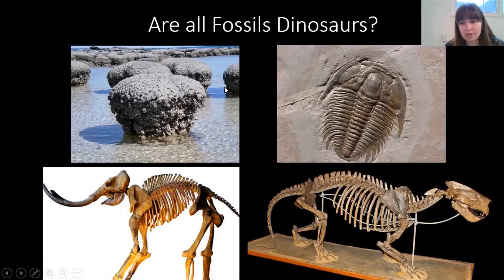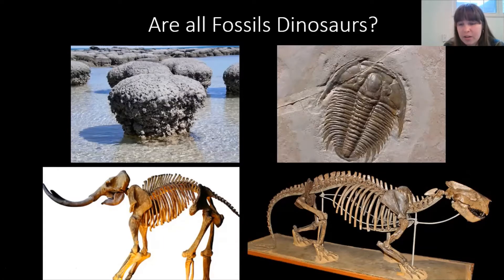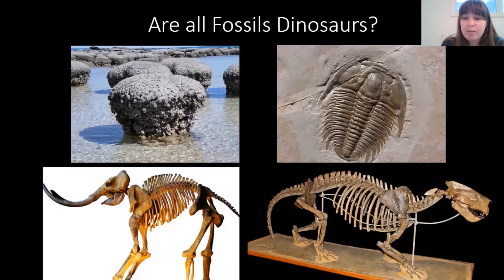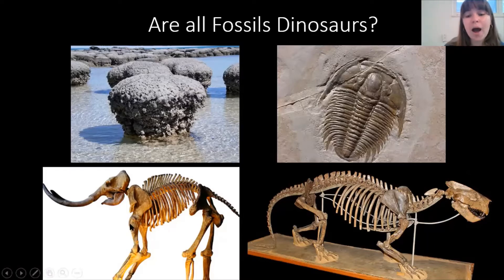This fossil in the top right is a trilobite. Trilobites are arthropods — you might wonder what that is, but arthropods are part of the same big group as spiders and scorpions. So this is kind of like an ancient creepy crawly, and trilobites are another type of creature that was fossilized before dinosaurs ever even existed.